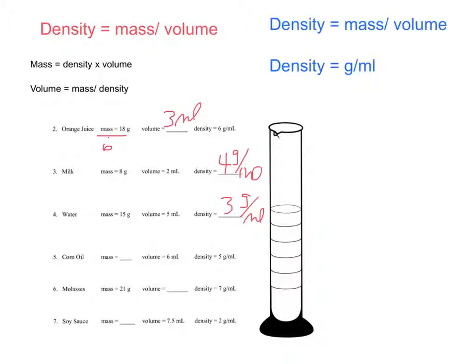Corn oil, our mass is unknown. Our volume is 6 milliliters, and our density is 5 grams per milliliter. Mass equals density times volume. So 6 times 5, we would have 30. I want to show you that 6 milliliters times 5 grams per milliliter allows our milliliters to cancel out, and therefore our units would be 30 grams.